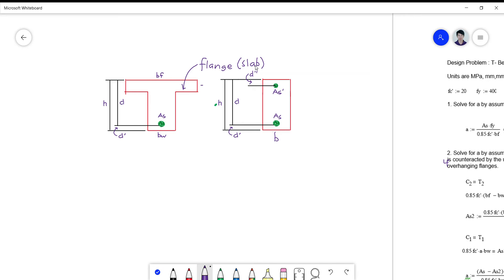The flange is actually a portion of the slab to which the floor system is attached. We are actually using the slab to give advantage to the beam section so as to increase your compression requirement. This flange actually increases your flexural requirement. So it increases your compression strength.